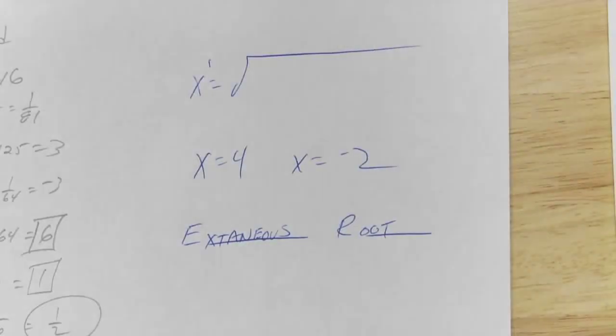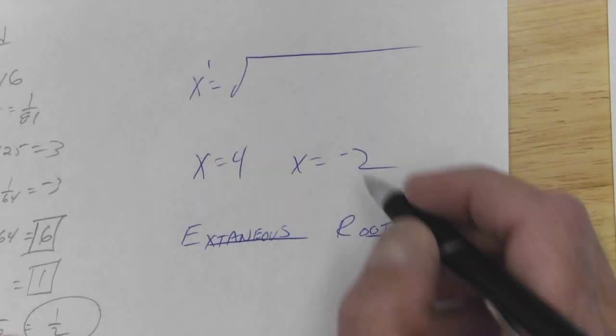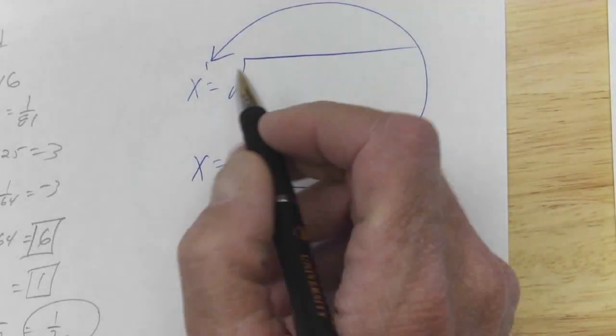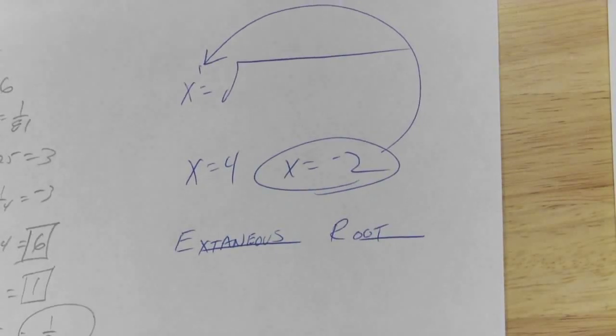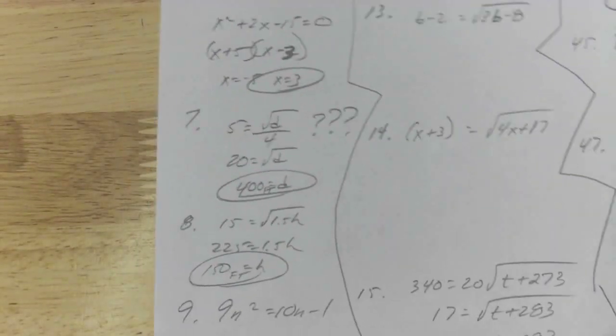Extraneous root is one that kind of happens from changing the degree of the equation. Right now I've got an x to the first. If I square both sides I get an x to the second, and that change of the power might change the number of solutions. Can I ever have the square root equal a negative? No. So sometimes you got to plug if you get two answers. You might go, ooh, one of these may not work, so I need to plug them both back in and make sure they work. It's an extra step, I know it's a pain in the butt.